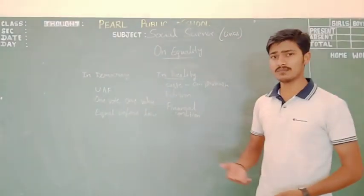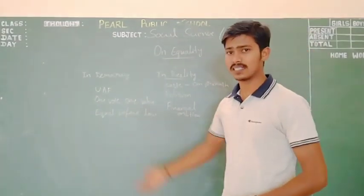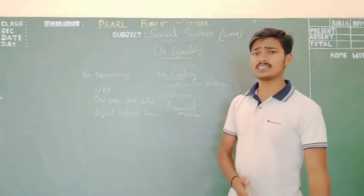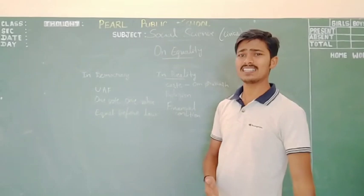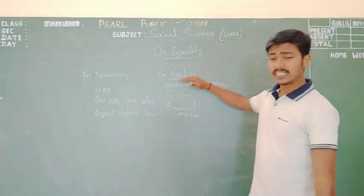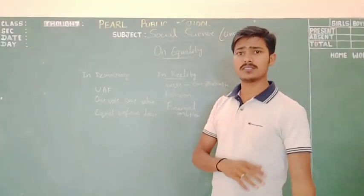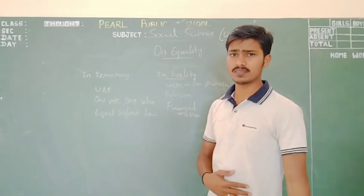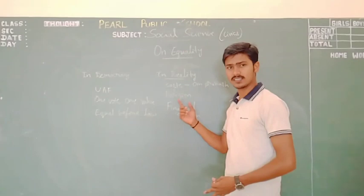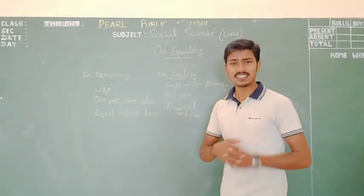When it comes for the reality in democracy, how it is, we will discuss later. First, we are going to discuss how it is in our society. In reality, the equality is not confirmed. It is going to be confirmed based on caste, religion, and their financial conditions.